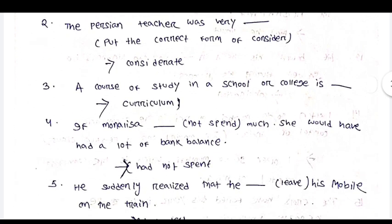A course of study in a school or college is dash — curriculum. If Mona Lisa does not spend much, she would have had a lot of bank balance. Had not spent.